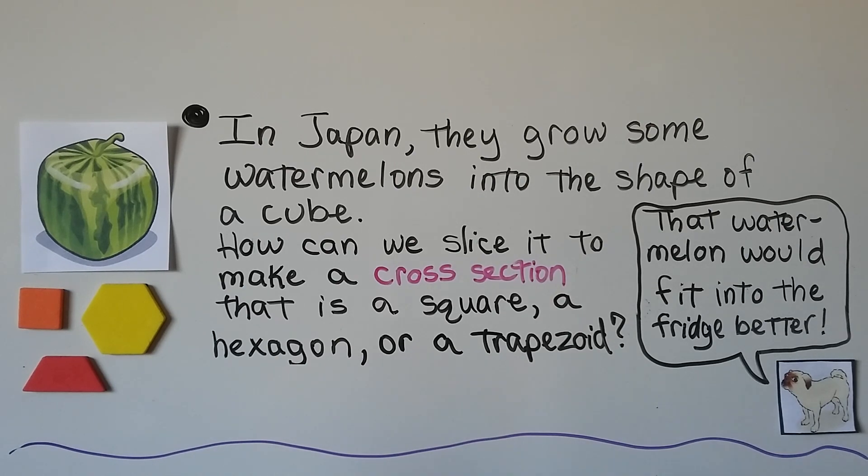Now this is kind of cool. In Japan, they grow some watermelons in the shape of a cube. So how can we slice it to make a cross section that's a square or a hexagon or a trapezoid? We could make a square by slicing it perpendicular to the base or parallel to the base, couldn't we? But what about a hexagon or a trapezoid?